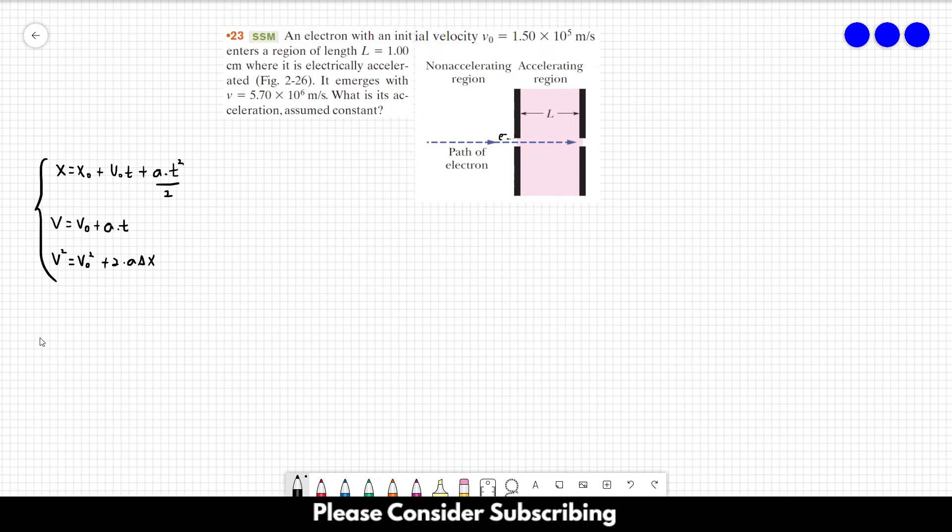So what we have? We have the initial velocity, which is 1.5 times 10 to the 5 meters per second. We have the final velocity, which is 5.7 times 10 to the 6 meters per second. And we have delta x, which is L. L equals to delta x, which is 1 centimeter or 0.01 meters. So those are the data that the exercise gave us.